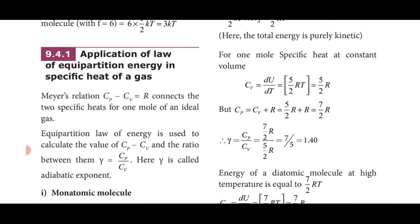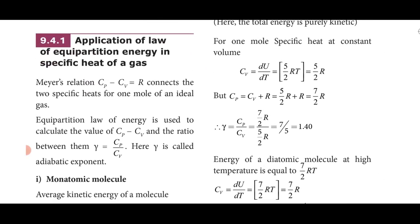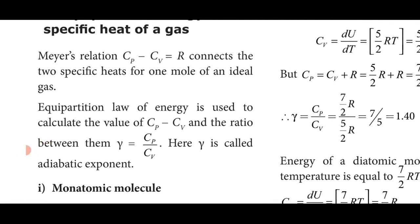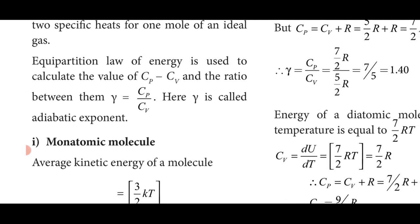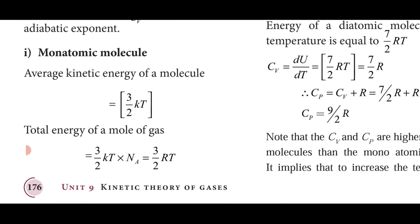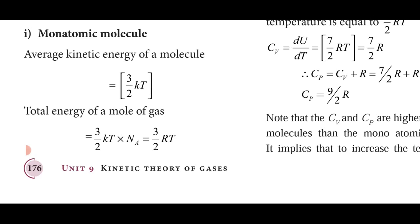Next is the application of the Law of Equipartition of Energy to specific heats of gases. From Mayer's relation: Cp − Cv = R, and the adiabatic exponent μ = Cp/Cv. For a monoatomic molecule, the average kinetic energy is 3/2 kT, so the total energy for one mole is 3/2 kT × Nₐ = 3/2 RT, since NₐkT = RT.